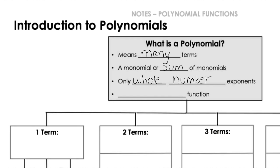A polynomial is always a continuous function, so it's not discrete. It's always continuous. So that's a little bit about what a polynomial is.